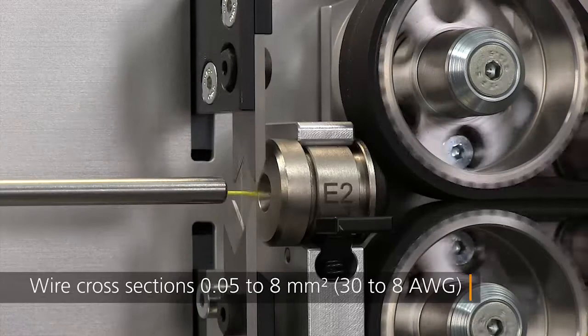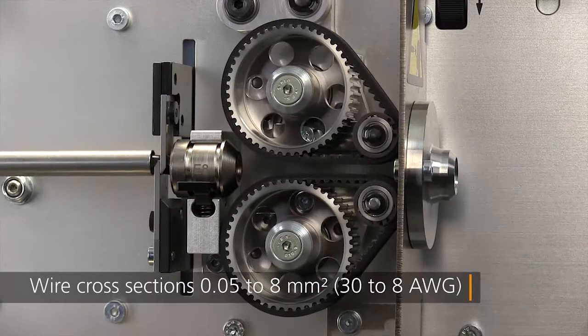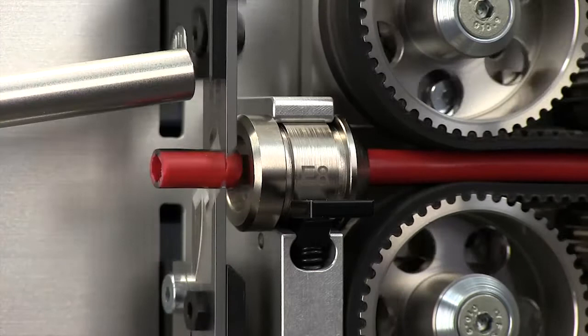The EcoStrip 9380 combines the latest technologies with Schleuniger's industry-renowned precision to make it easier than ever to process a wide range of entry-level applications.